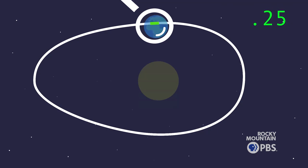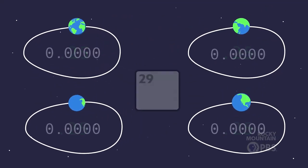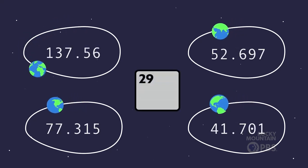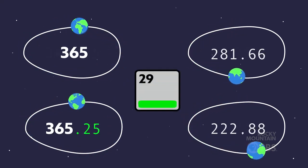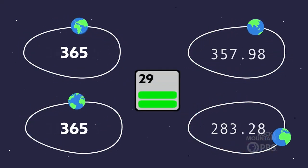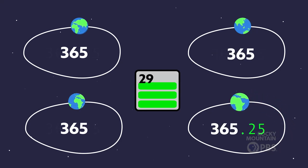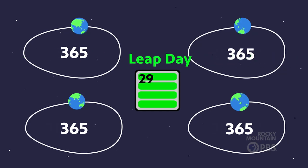For three years we ignore it, and then every fourth year we add four quarters — one whole day — back into our calendar. It was added to the shortest month, February, which is where every four years we get February 29th.